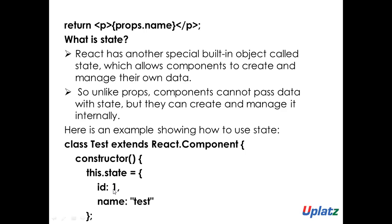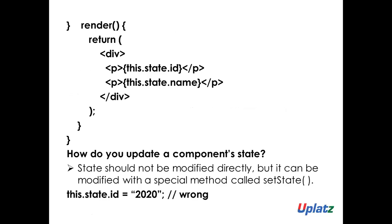If you want to use this ID and name in some other component, then that should be done through props. To get it, you need to first import this class in that particular component. Once import is complete, you can use this.props.id in the child component and you will get the value. This is how state and props play a role in ReactJS.